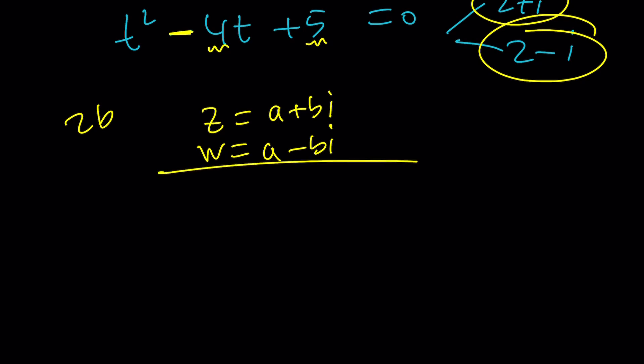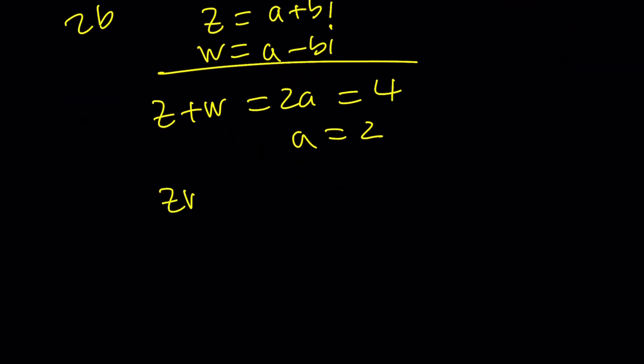Now let's go ahead and take a look at z plus w, which is 2a because bi cancels out. And we know it's equal to 4. So a is equal to 2. And their product zw is equal to a squared plus b squared. Remember, that's a real number from multiplying two conjugates. And that's equal to 5.